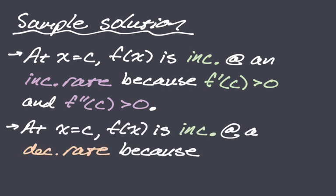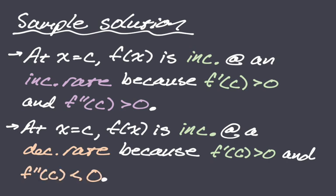Now compare that to: at x equals c, f of x is increasing at a decreasing rate. If f of x is increasing, that's a first derivative situation, so f prime of c is greater than zero. At a decreasing rate means the derivative is decreasing — the rate of change of the rate is negative — so f double prime of c is less than zero. I'm color-coding this to make it clear; maybe take some notes.